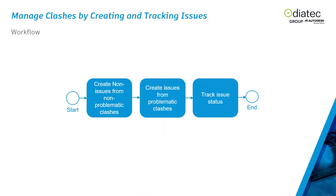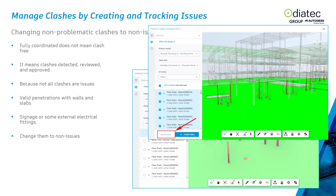To manage clashes by creating and tracking issues: first you create non-issues from non-problematic clashes — clearing all the false positives — then you create issues from problematic clashes and track their status. These are the same issues you'd create in the Docs environment, Build, or anywhere else in ACC or BIM 360. A fully coordinated model does not mean clash-free; it means clashes have been detected, reviewed, and approved through a process.